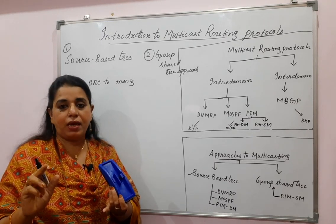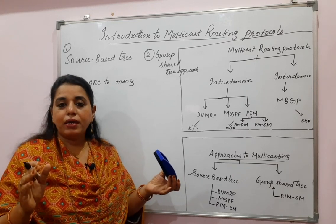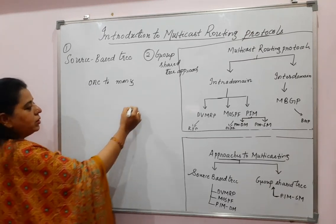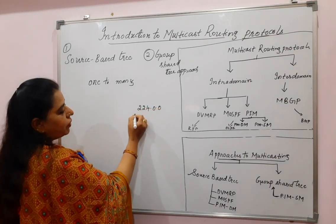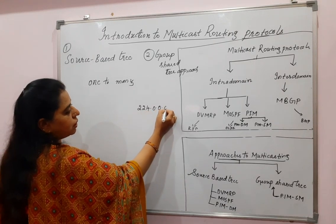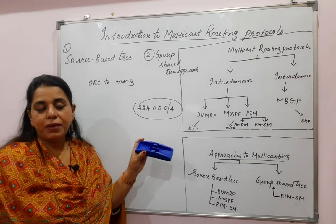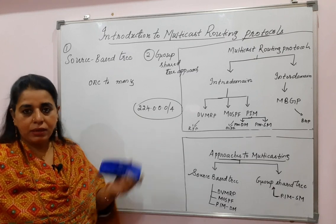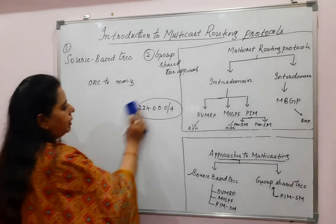Class D, with the block 224.0.0.0/4, is completely meant for multicast routing. This is a huge block and addresses from it can be used as destination addresses when a packet is used for multicast routing.